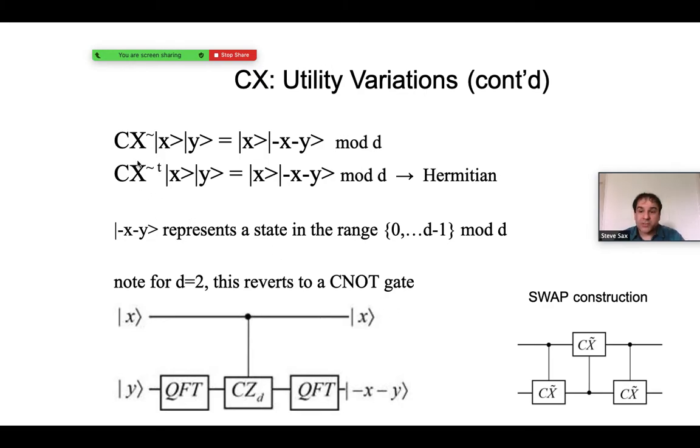We'll call it the control shift tilde gate. The way this operates on both Qudits is it yields another state, minus x minus y modulo d. Note that the inverse of this gate is indeed the same as the original gate. It is Hermitian, and we can actually construct a swap gate with three of these gates in the same manner in which three CNOT gates can construct a swap gate.